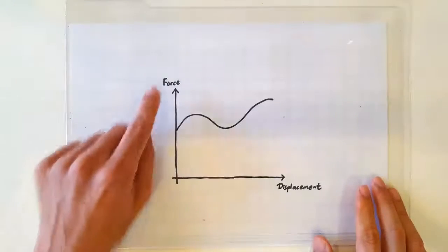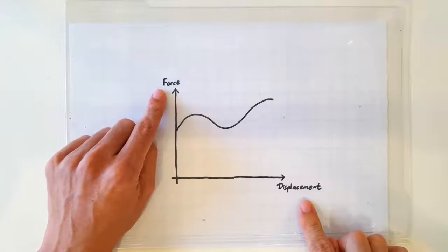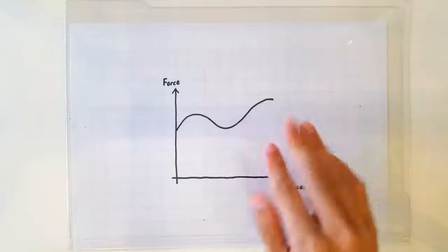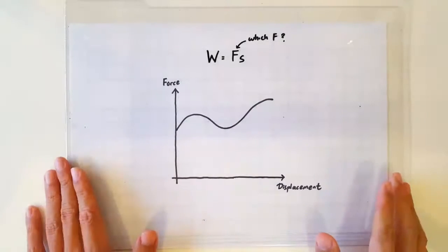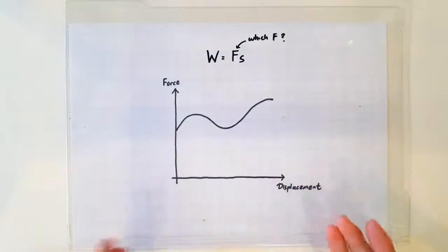In general, the force need not be constant, so your Fs graph may look like a curve like this. Then you realize you cannot calculate work done simply by one F times one S because which F are you going to use?